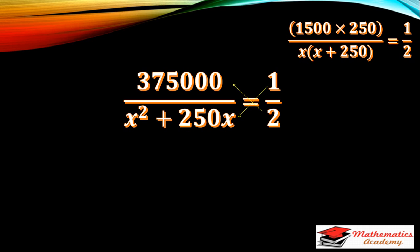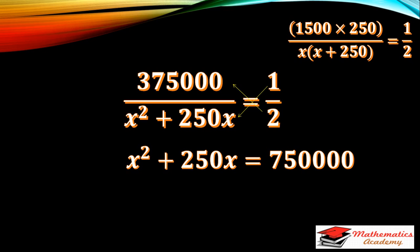After multiplication of 1500 and 250 we get 375000. By cross multiplication, we get: X squared plus 250X equals 375000.